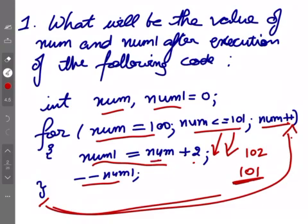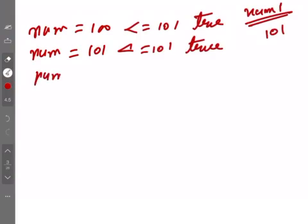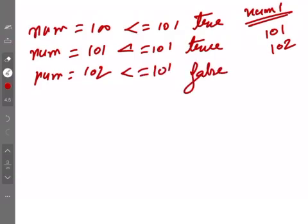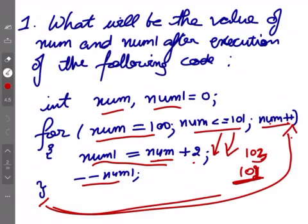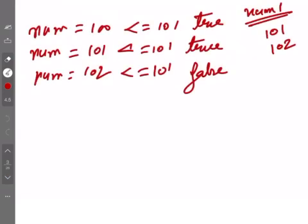Condition check hui, true hai, toh phir se loop ke indar ae. Num1 is equal to num plus 2, num filhal 101 hai, 101 plus 2 is 103 so num1 ki value hoi 103, ek kam kar diya toh 102 ho ghe. Phir yaha aega num plus plus, num pishli baar 101 tha is liye num 102 ho chayega aur yeh toh 102 hoi gaya tha. 102 less than equal to 101 is false, so it will stop and it will come out of the loop. Loop khatam honne ke baad num aur num1 ki value kya hai, toh iska answer kya hai num is 102 and num1 is also 102.